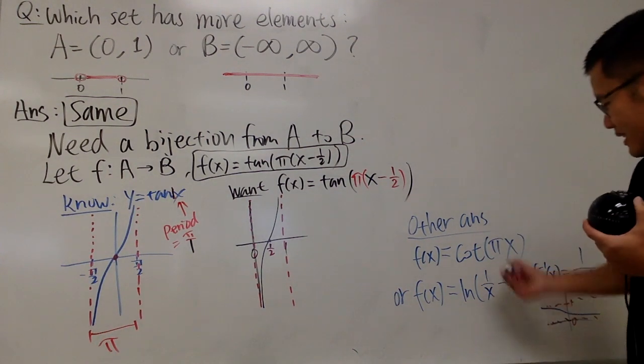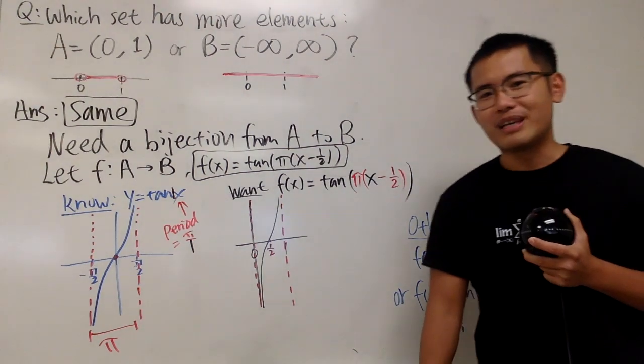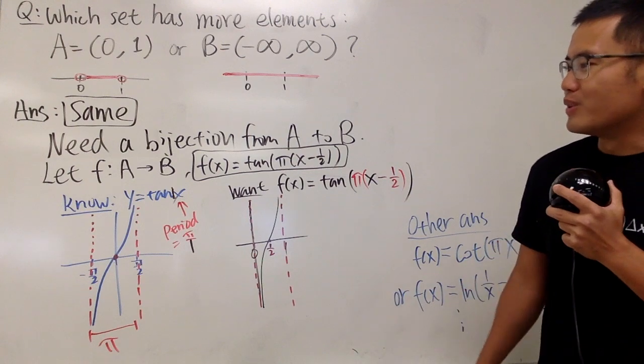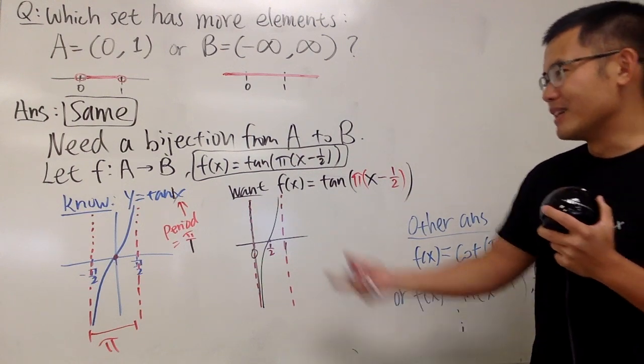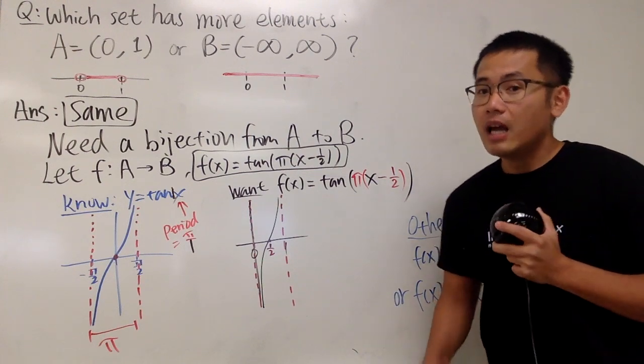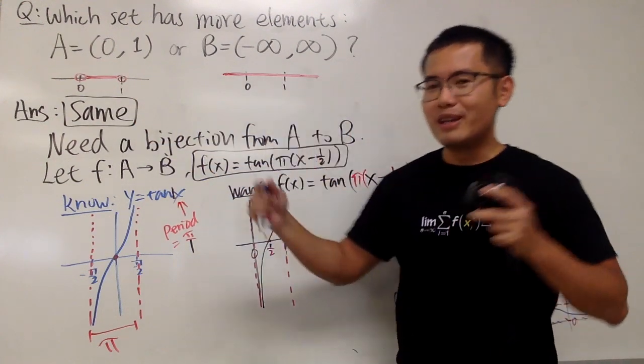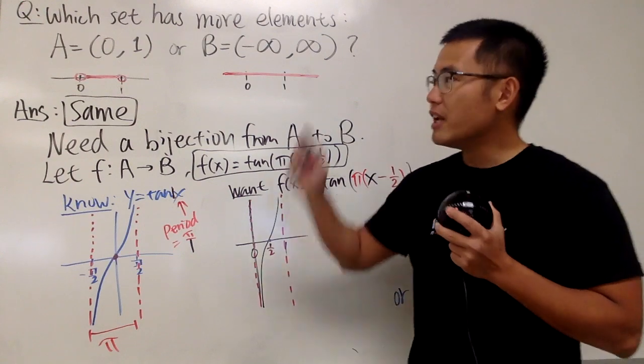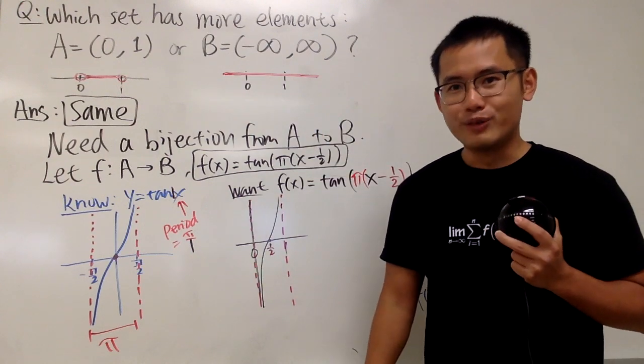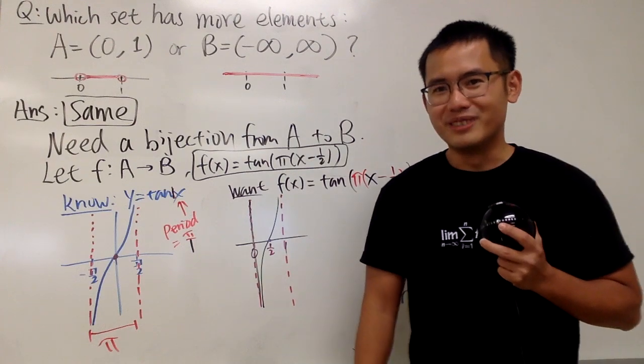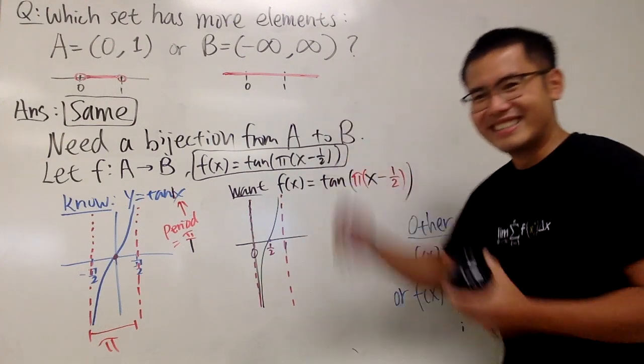So, these are just the other answers that you can possibly have, but I think this right here is the one perhaps it's easier for us to think about, in my opinion, because we know tangent x much better. Man, this right here, the length is only 1. The length right here is infinite. But, in terms of the number of elements, they have the same amount in both sets. Very surprising, isn't it? Leave a comment down below and let me know what you think. Anyway, as always, that's it. Thank you.